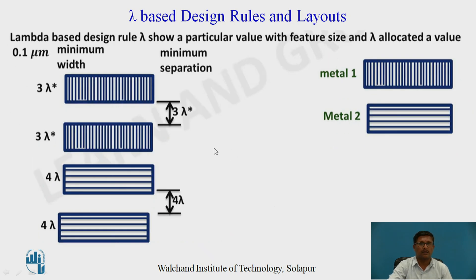For Metal 1: the width is 3 lambda, and the separation distance between two Metal 1 lines of the same type is also 3 lambda. For Metal 2: the width is 4 lambda, and the separation distance between two Metal 2 lines of the same type is also 4 lambda.